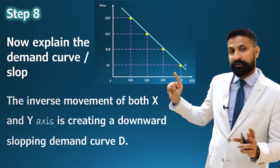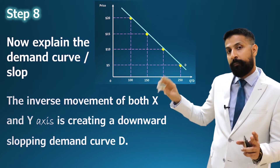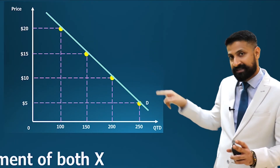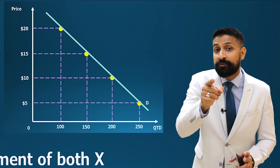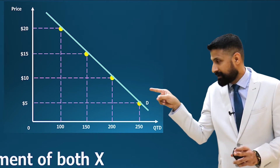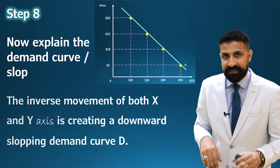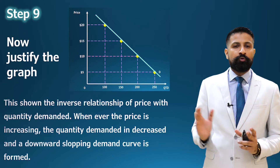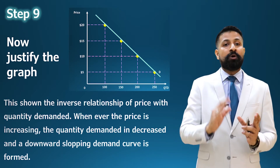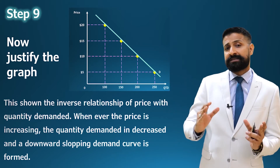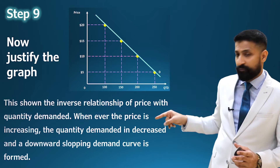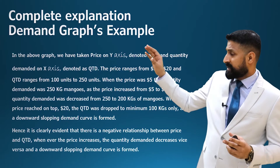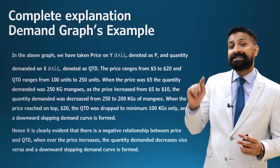Step number eight: describe the curve. Write: 'Inverse movement of both x and y is creating a downward sloping demand curve, which is denoted as D.' Step number nine — the last step — justification. Write: 'This shows the inverse relationship of price with quantity demanded. Whenever the price is increasing, the quantity demanded is decreasing, and a downward sloping curve is formed.'